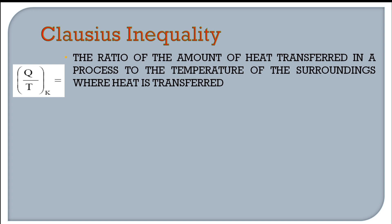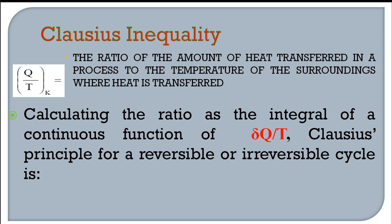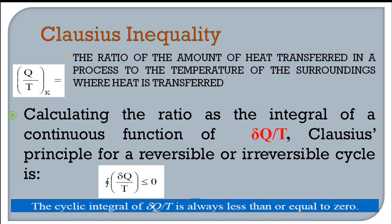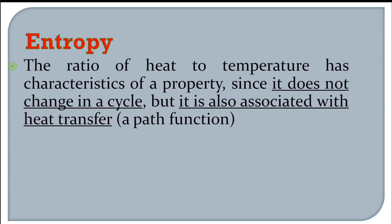From the Clausius inequality we introduce the new term entropy. Entropy is the ratio of the amount of heat transferred in a process to the absolute temperature of the surroundings where heat is transferred. Calculating this as the continuous integral of δQ/T, the Clausius principle states that the closed integral of δQ/T ≤ 0 for any cycle. This ratio Q/T has the characteristic of a property because it does not change over a complete cycle.